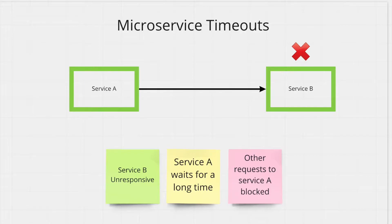Let's say we have two services, A and B, and A calls B through an HTTP call. Let's say service B is unresponsive for some reason. In this case, A will have to wait for a very long time unless B gets back to it. This can create a bunch of issues upstream — there might be other services calling service A, which has to wait now, given service A is busy.